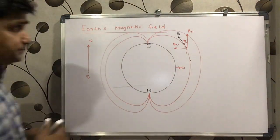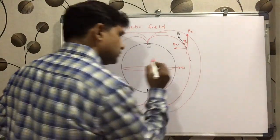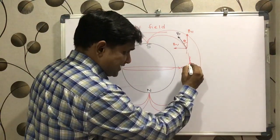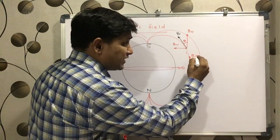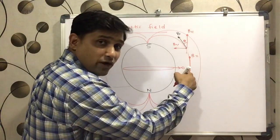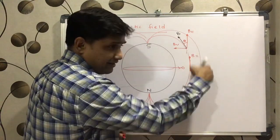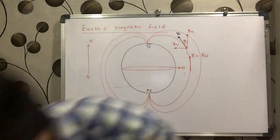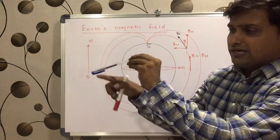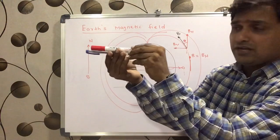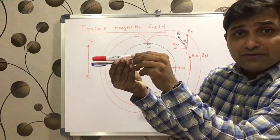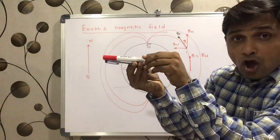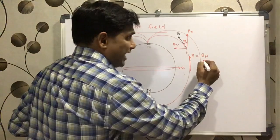Now, if we talk about the equator — at the magnetic equator, Earth's magnetic field becomes exactly horizontal. The needle will be exactly horizontal at the equator. So at the equator, the angle of dip is zero, because the entire Earth's magnetic field is horizontal there.